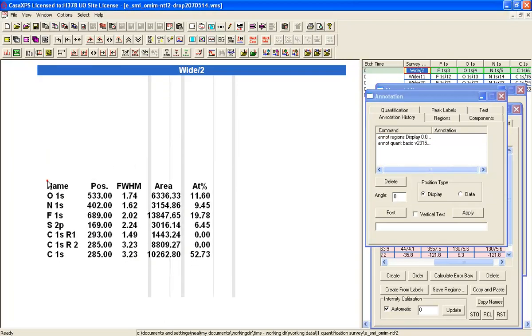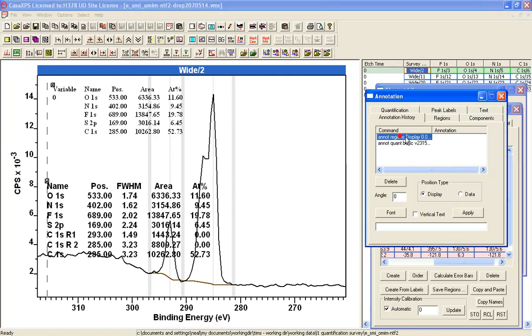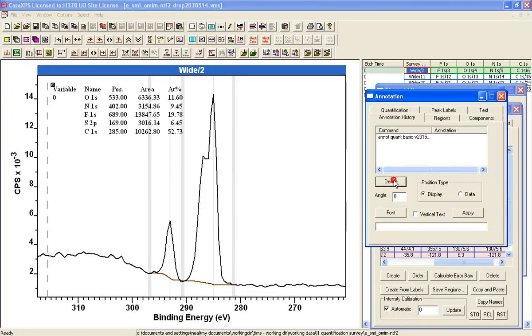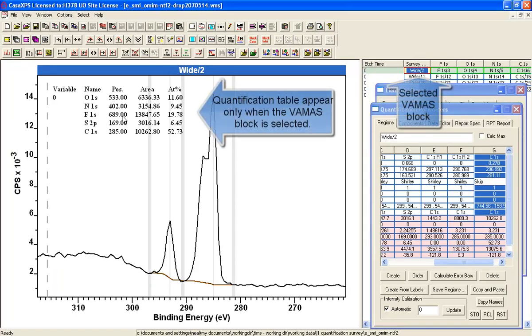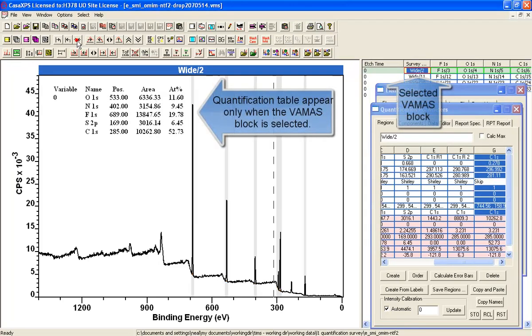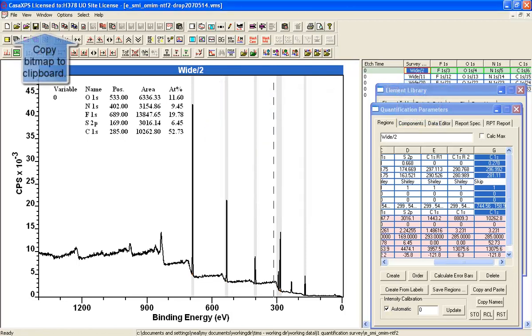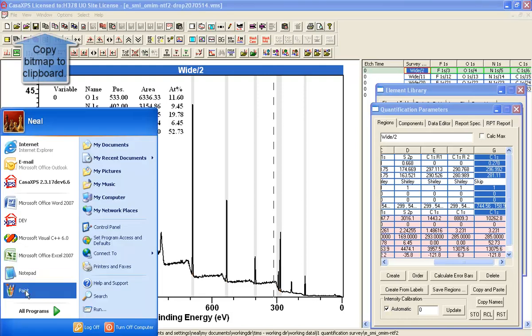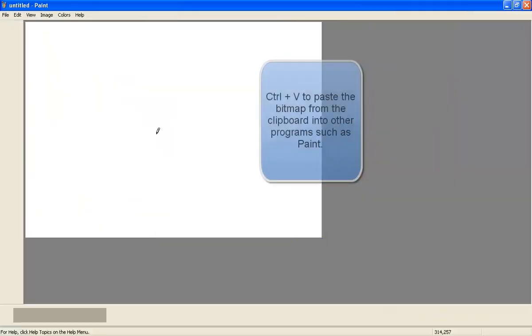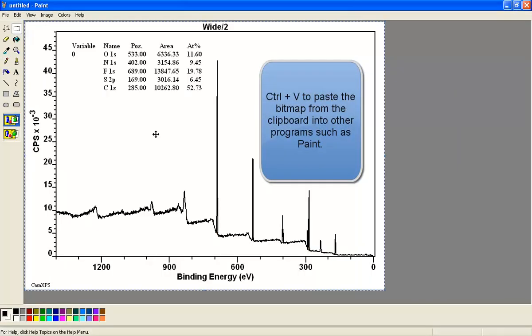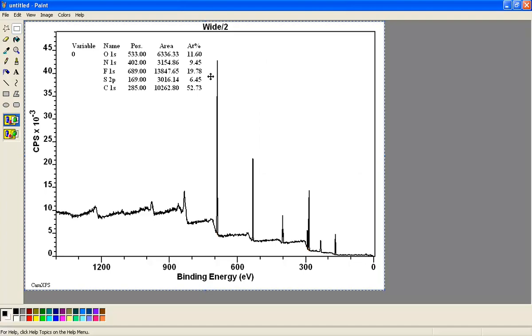So what I'll do now is just delete this table here. And we now have a quantification report that I can then copy and I can put that into some other program. So there's a report coming from the survey spectrum based on these regions.